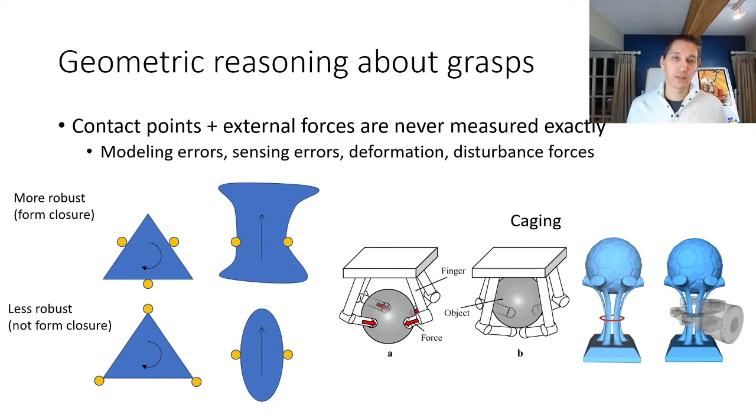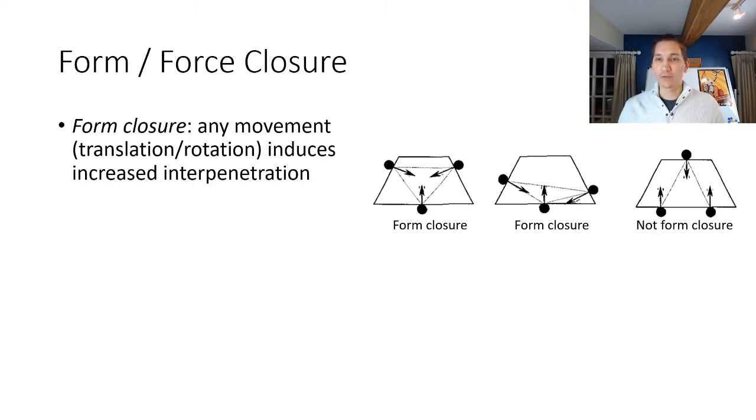Let's look a little bit more closely at form closure. The idea is that any movement of the object, whether it's a translation or rotation, will induce increased interpenetration between the object and the contact points. The two situations here on the left are in form closure and the one on the right is not because the object can move horizontally in either direction to escape the contacts.